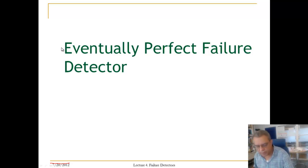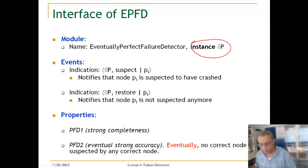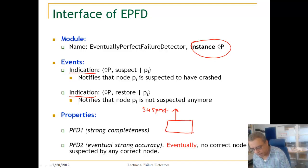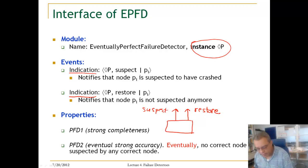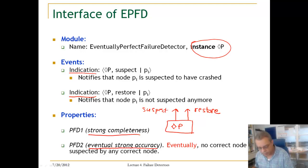We are going to talk about the eventually perfect failure detector. This is the implementation. The instance is called Diamond P, and it has two events: a suspect event and a restore event. A suspect event is triggered when a process is suspected to have failed. A restore event is triggered when the Diamond P failure detector made the wrong decision about a certain process. The two properties we have are strong completeness and eventual strong accuracy.